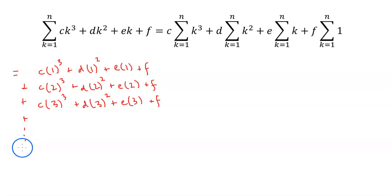All the way up to the last one, which would be n. So it would be c times n cubed plus d times n squared.